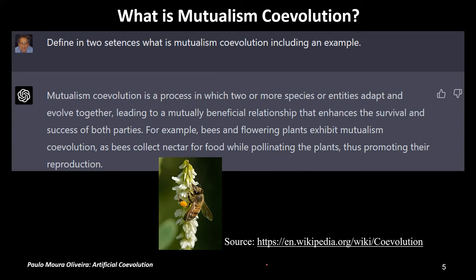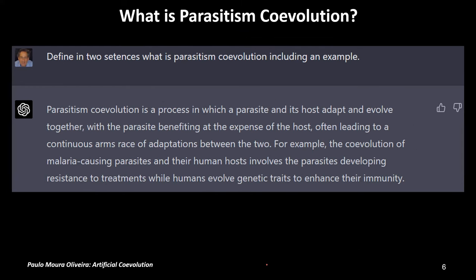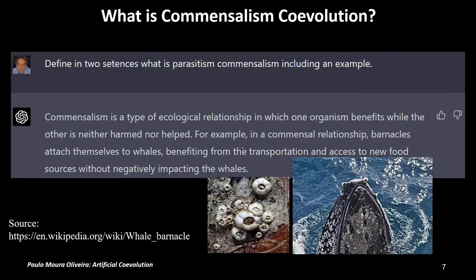Then we have mutualism. The example is between bees and flowering plants — in this case there is a mutual benefit between the two species. Then we have parasitism, where the parasite benefits at the expense of the host, and of course there is an adaptation in each of the species. Finally, we have commensalism, where one species is not affected and the other gets benefit. An example is whales and barnacles.